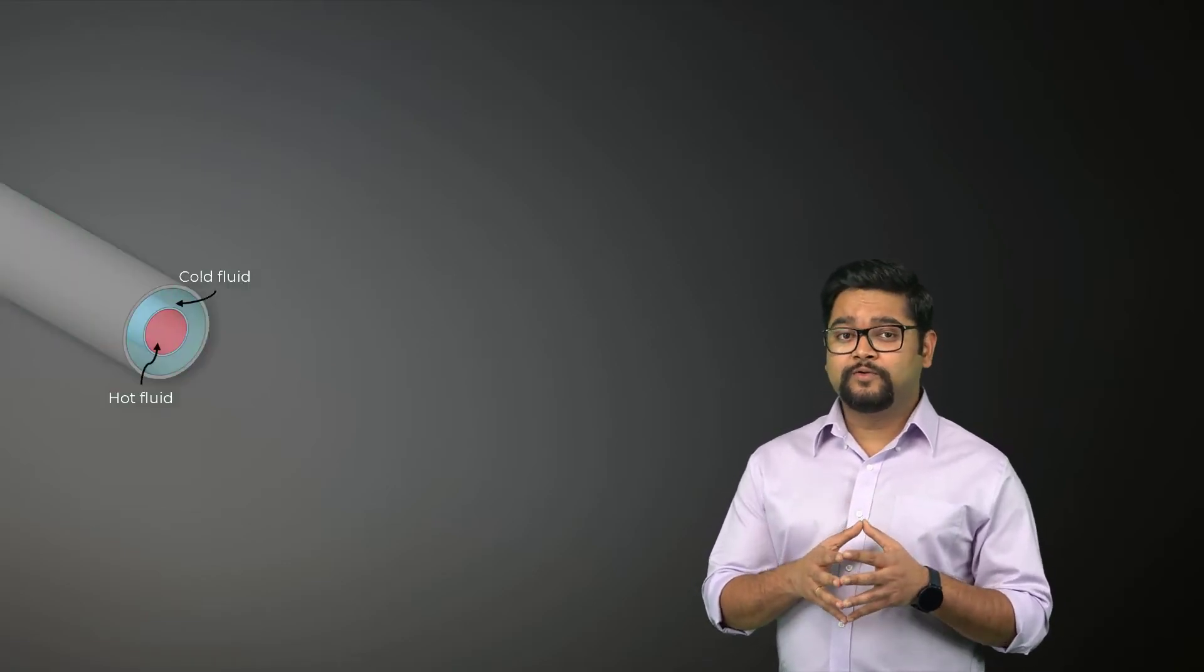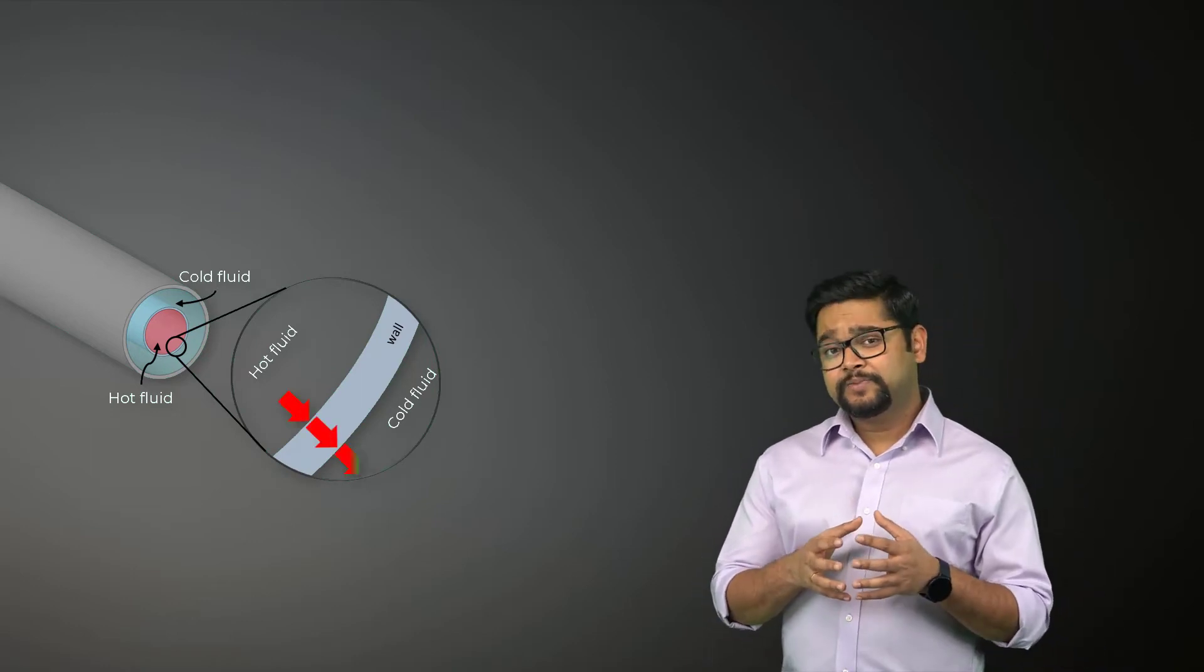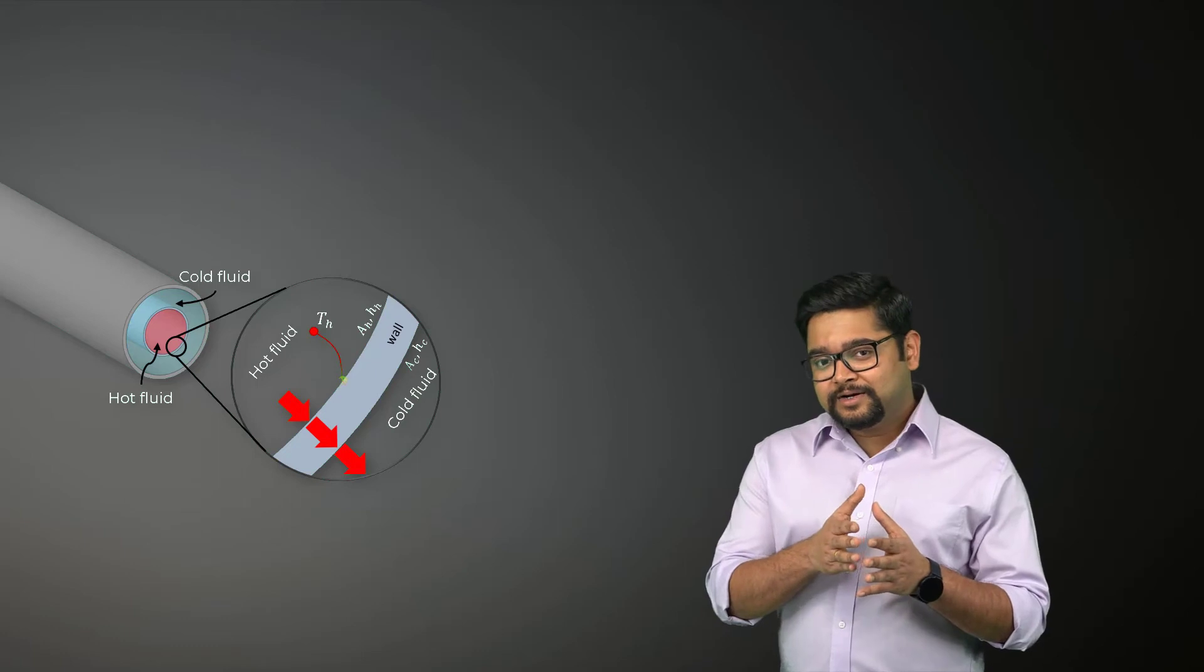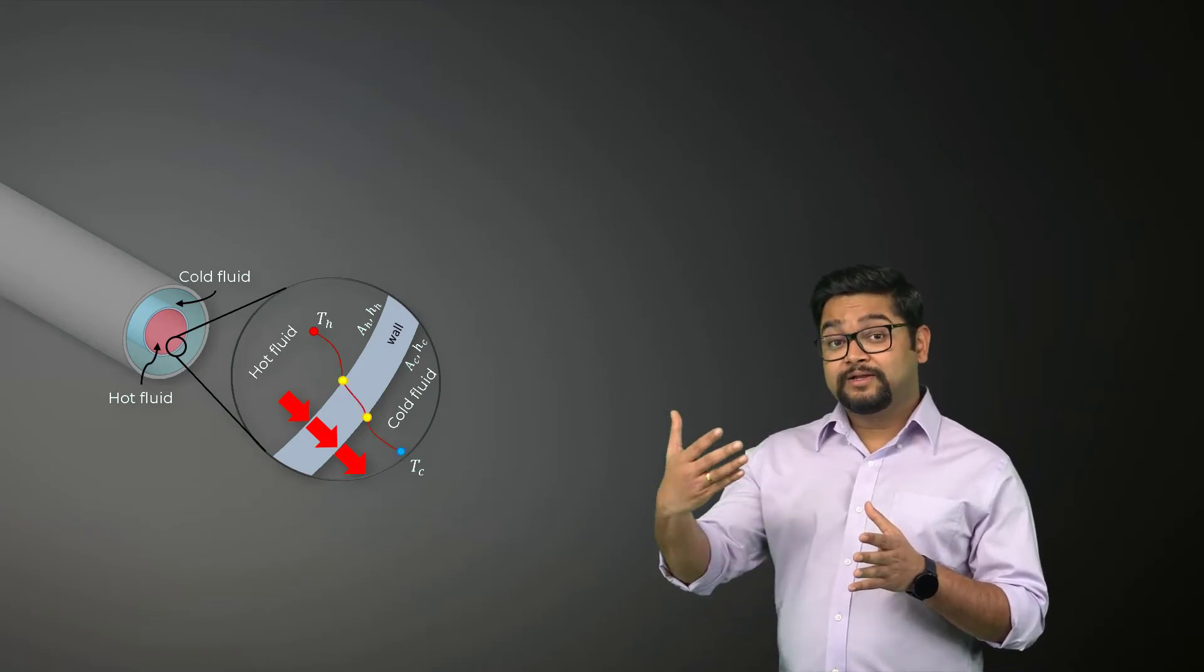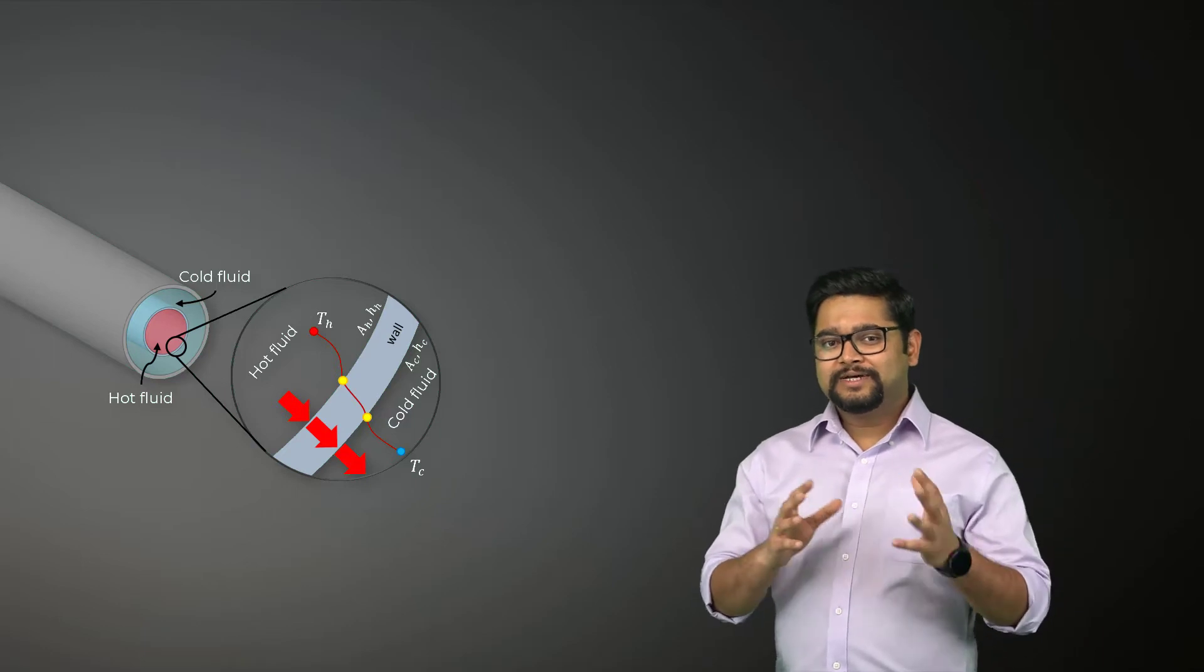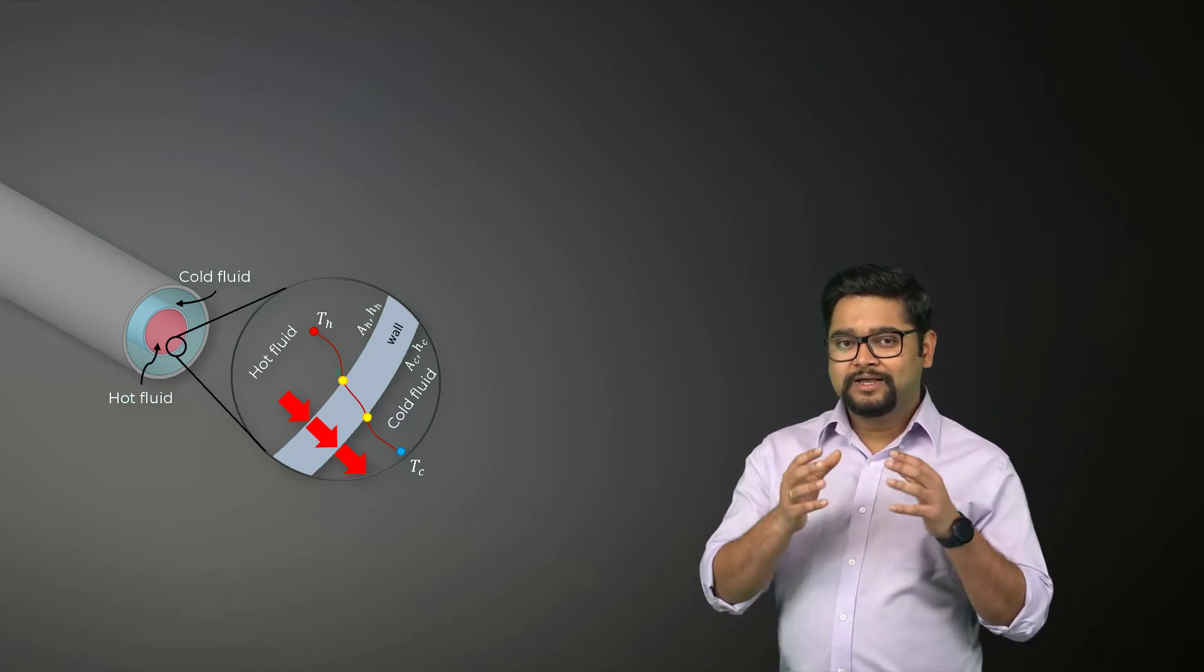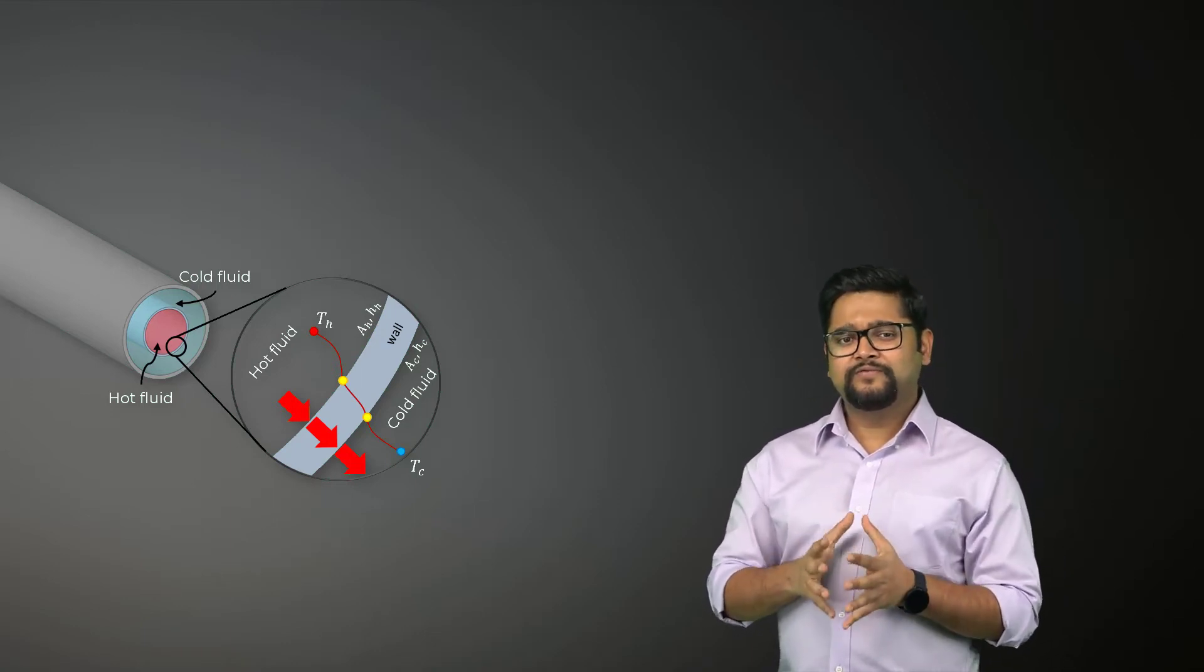Any heat exchanger typically involves two flowing fluids separated by a solid wall. Heat that is being convected by the hot fluid is conducted through the wall and then convected again by the cold fluid. Flow on either side of the heat exchanger is usually complex and local properties vary from one point to the other.